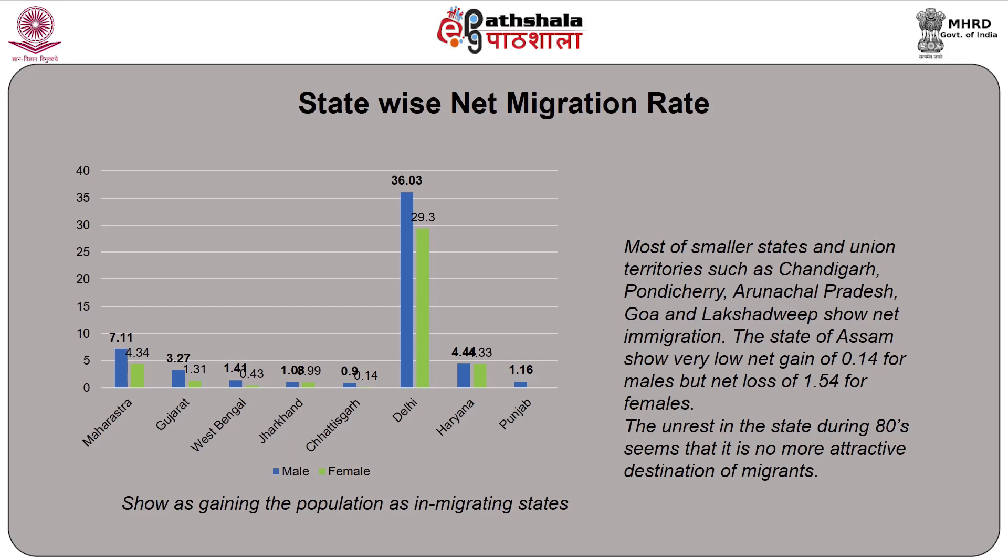Other states such as Maharashtra, Gujarat, West Bengal, Jharkhand, Chattisgarh, Delhi, Haryana, and Punjab show net population gain and are classified as in-migration states. Most smaller states and union territories such as Chandigarh, Pondicherry, Arunachal Pradesh, Goa, and Lakshadweep showed net immigration. The state of Assam shows a very low net gain of only 0.1 for males but a net loss of 1.54 million for females, revealing huge variations across states in migration data.